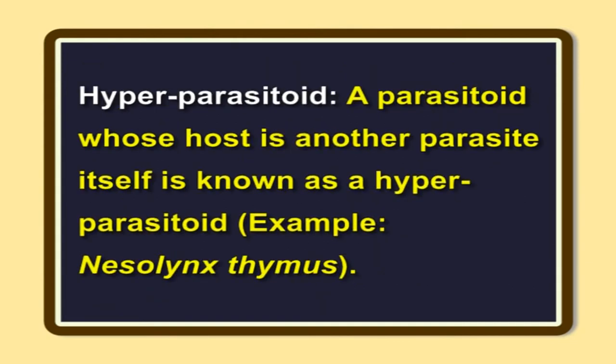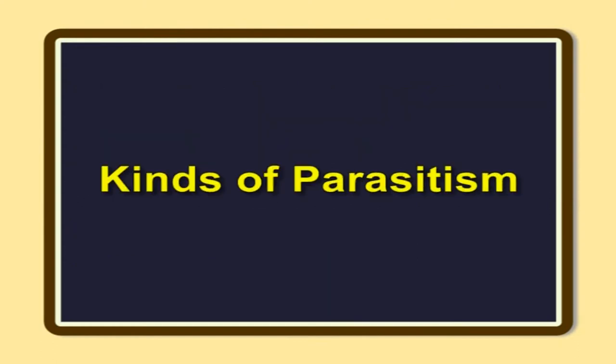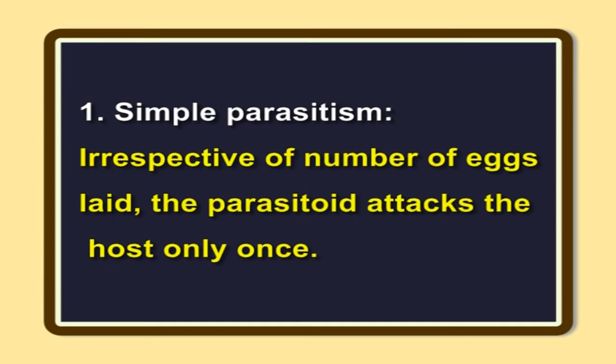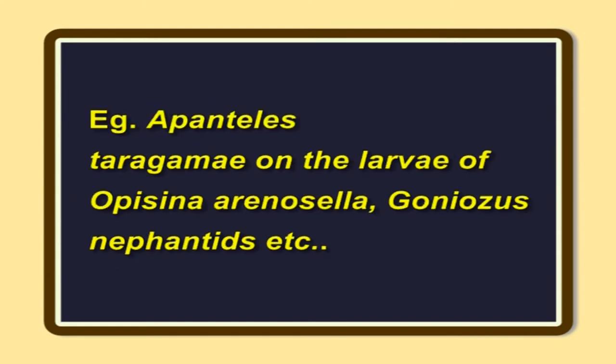Hyperparasitoid. A parasitoid whose host is another parasite itself is known as a hyperparasitoid. Example: Nesolynx thymus. Kinds of parasitism. Simple parasitism: irrespective of number of eggs laid, the parasitoid attacks the host only once. Example: Apanteles taragamae on the larvae of Opisina arenosella; Goniozus nephantidis, etc.